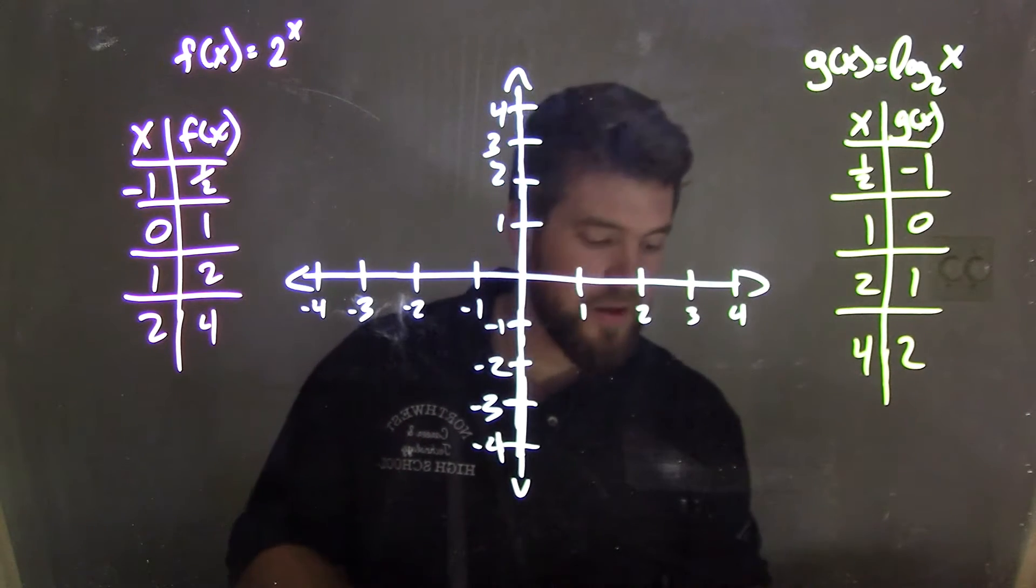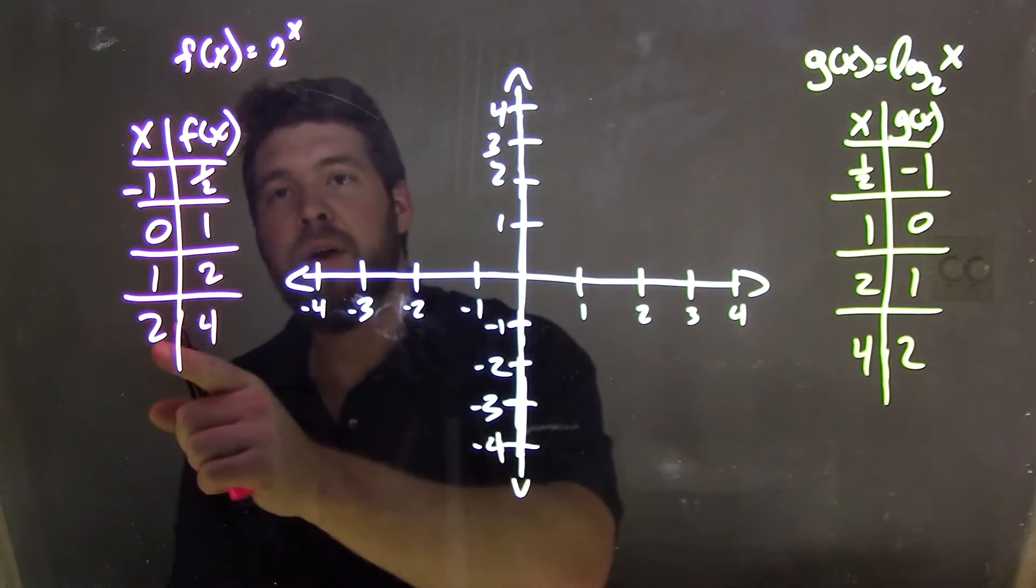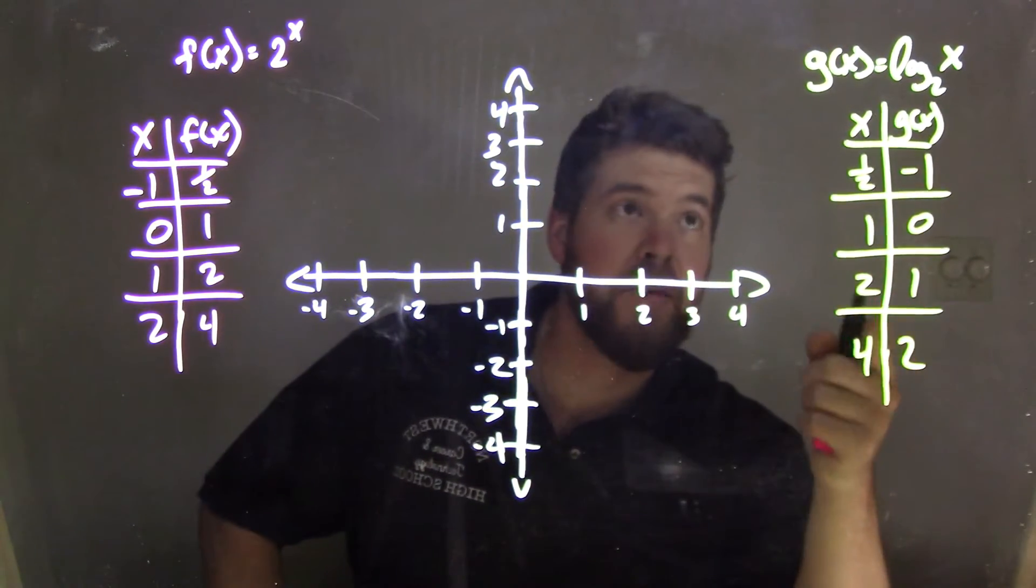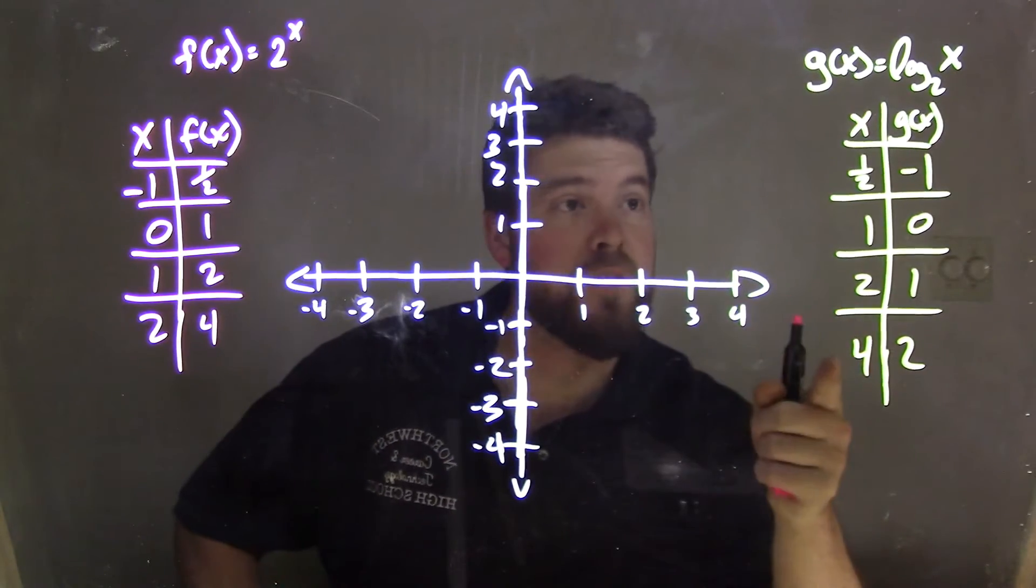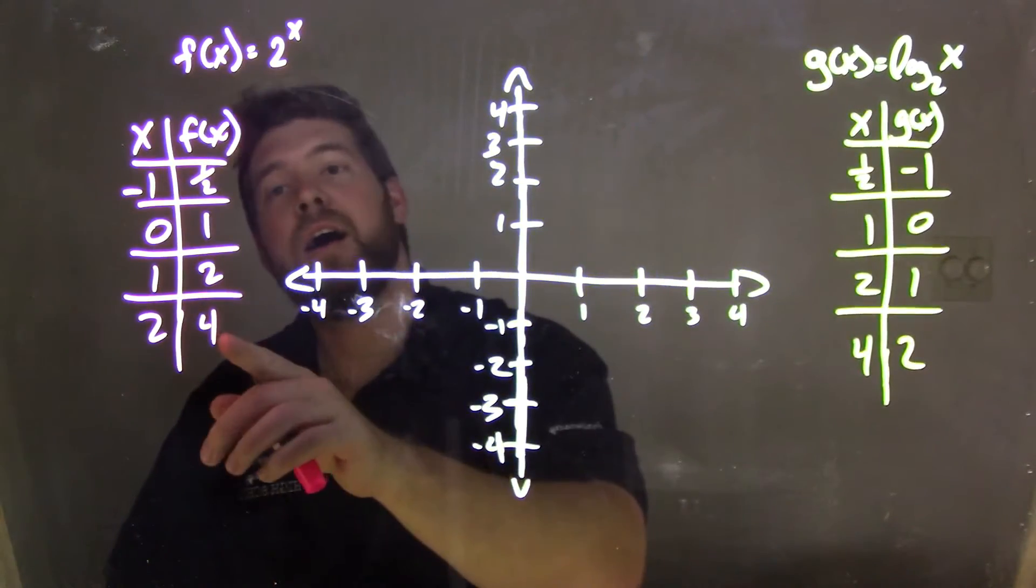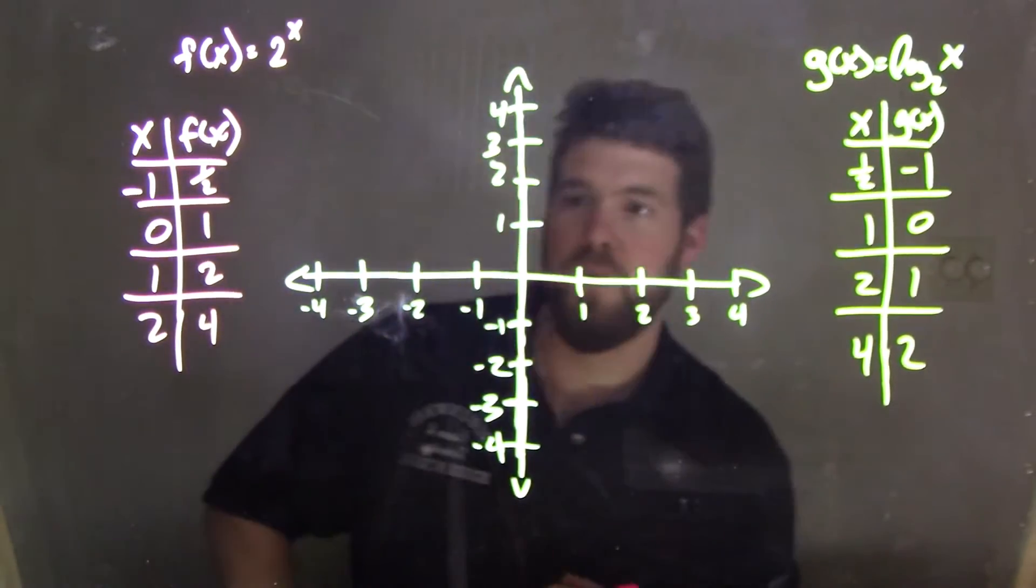one thing we should notice between each one of these is that the x values of the pink function, f(x), are the y values, or the g(x) values of g(x), and vice versa. The x values of g(x) here are the f(x) values here for f(x), the y values.